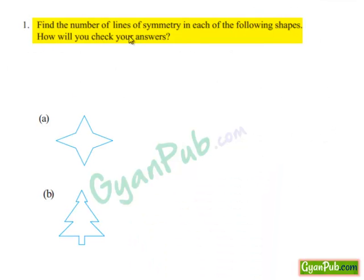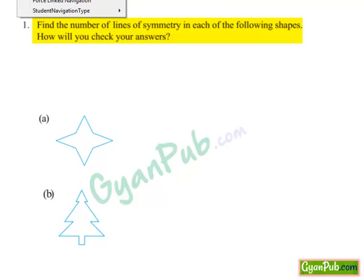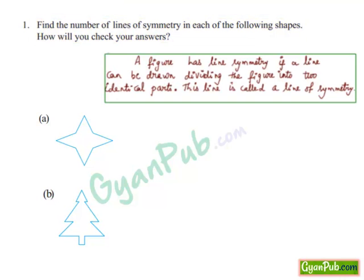The given question is: find the number of lines of symmetry in each of the following shapes. Here they have given some shapes and asked us to find the number of lines of symmetry. Let's define symmetry first. As per the definition, we know that if a figure has line symmetry, a line can be drawn dividing the figure into two identical parts — this line is called the line of symmetry.